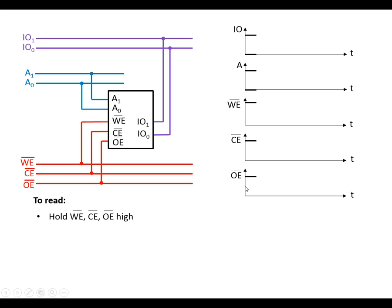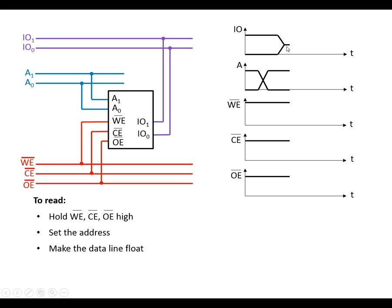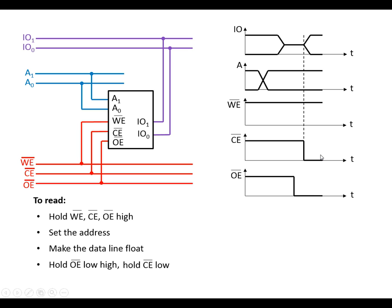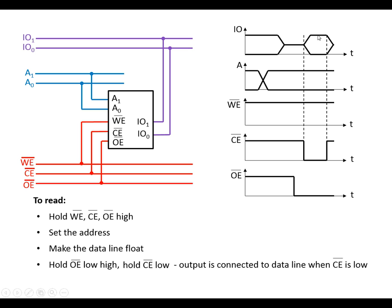To read from the module, again make sure all control lines are held high. Set the address to read from, and ensure the data lines are floating — we don't want a conflict between anything on the data line and what's stored in memory. Then hold output enable low and chip enable low (these can be swapped). While both are low, data from the memory module is driven onto the data lines. As soon as one returns high, the data line goes floating again.